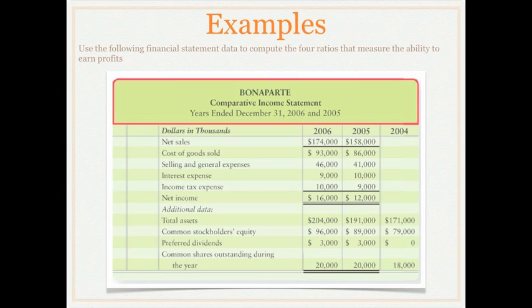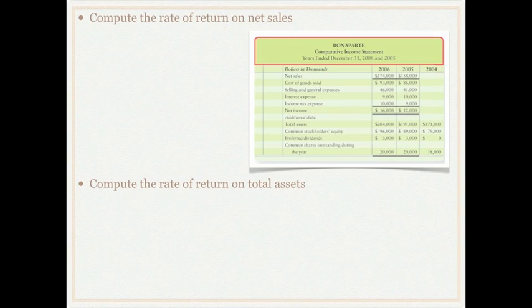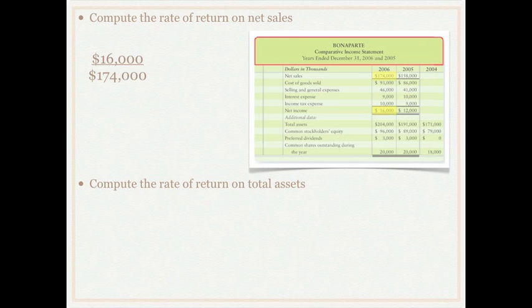Hopefully you have now calculated the rate of return on net sales and the rate of return on total assets. For net sales, we take our net income of sixteen thousand dollars and divide that by our net sales of one hundred seventy-four thousand. That gives us a rate of return on net sales of 9.2 percent — meaning for every dollar of net sales, 9.2 cents on the dollar actually becomes net income.